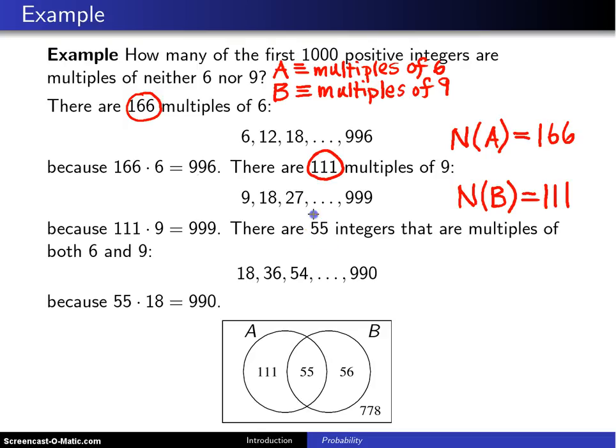Next, there are 55 integers between 1 and 1,000 that are multiples of both 6 and 9, and those numbers are going to be 18, 36, 54, 72, all the way up to 990, and that will be because 55 times 18 is 990, so the number of elements in A intersect B is equal to 55.